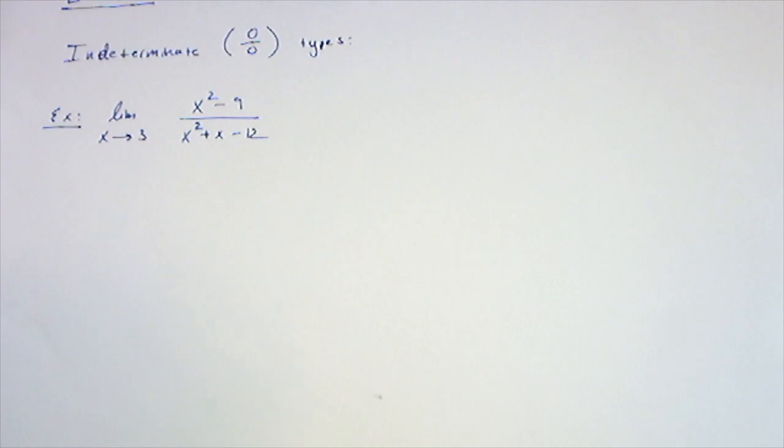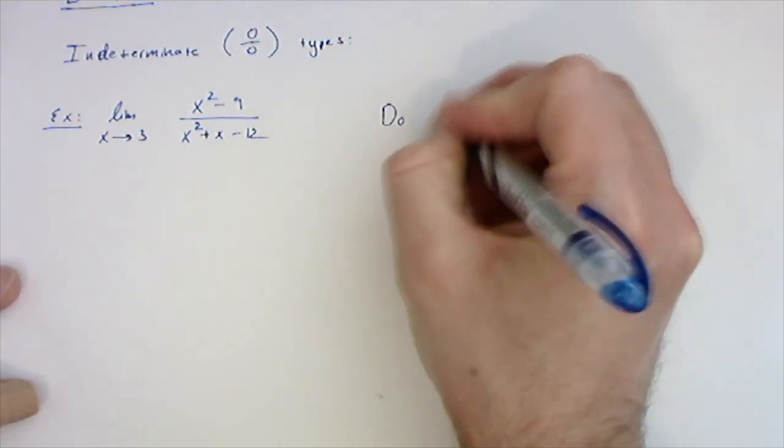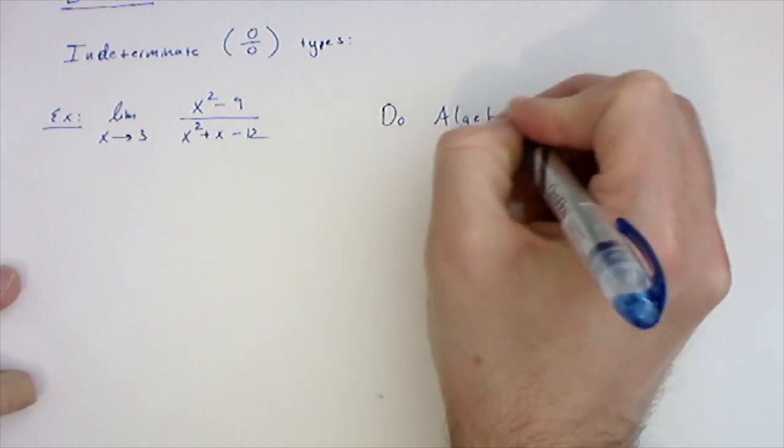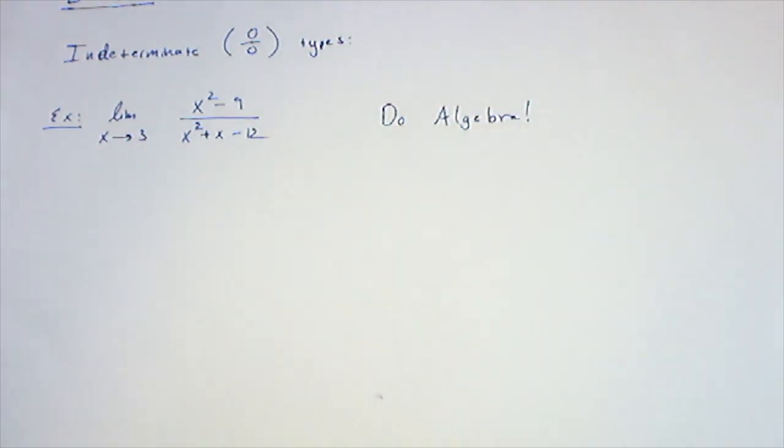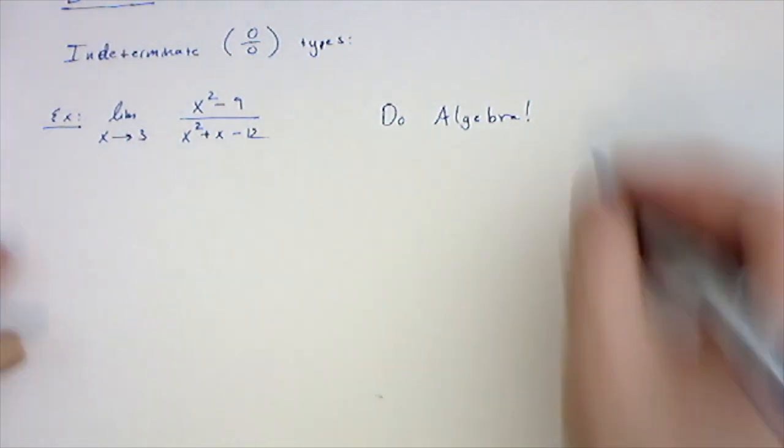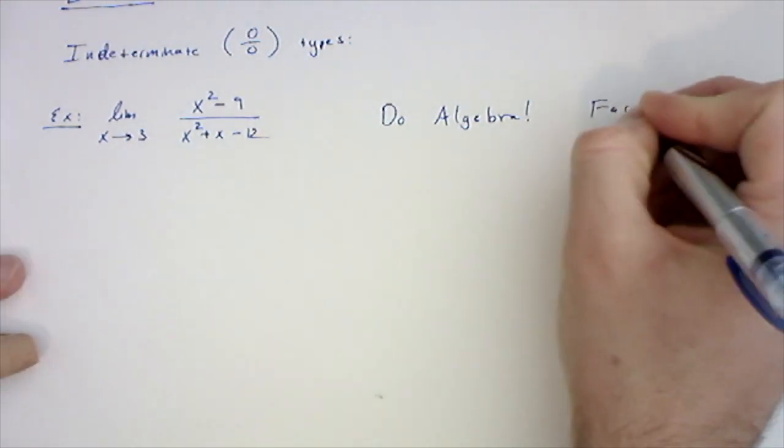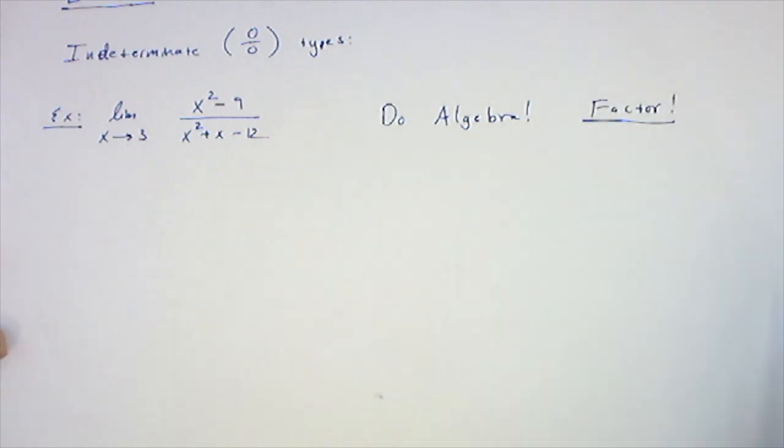When we're trying to evaluate a limit like this, what we often have to do is some algebra, which often involves either factoring or multiplying by a conjugate or using a common denominator. In this case we're going to factor. Usually there's factoring involved in kind of all of them, even if we consider the other steps first.